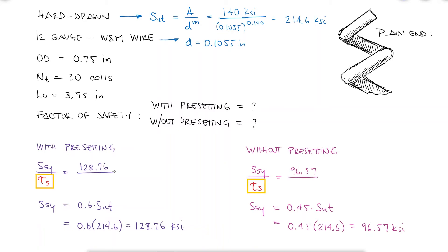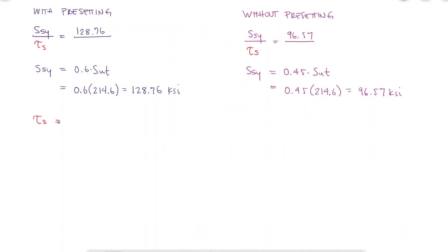The maximum torsional shearing stress will happen when the spring is compressed to its solid length. We've already used the expression to calculate the solid length for plain-end springs before. Links below. We have the diameter that we just found for a 12 gauge wire, and it was stated that the spring had 20 coils.